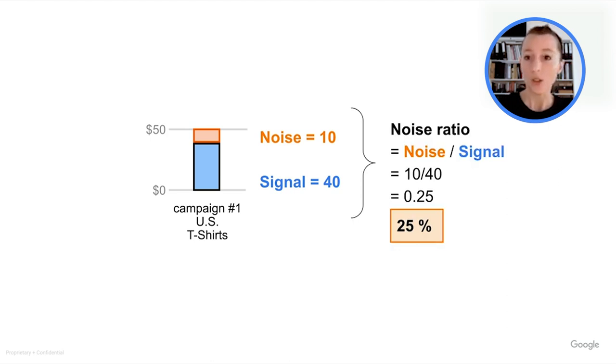So for this bucket, the noise to signal ratio is going to be 10 over 40, which is 0.25, 25%. So really what this ratio is, is simply how big the orange bar is relatively to the blue bar, which is the real measurement data.